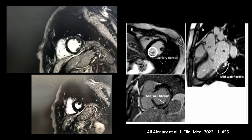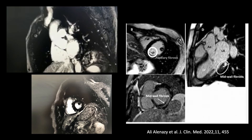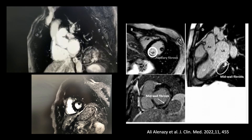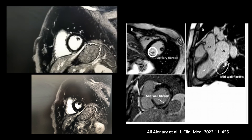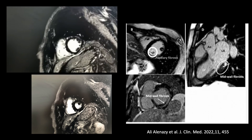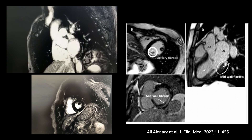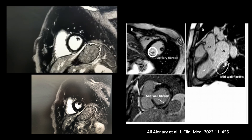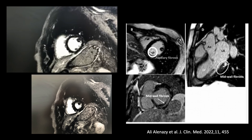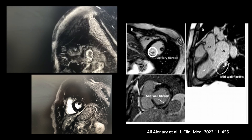CMR can help stratify MAD patients at risk for malignant arrhythmias, as it allows the detection of focal or diffuse fibrosis that may be responsible for re-entry circuits, also providing evidence of early structural and functional remodeling.